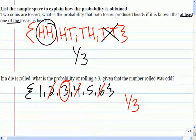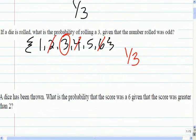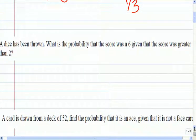A dice has been thrown. What is the probability that the score was a 6 given it was greater than 2?